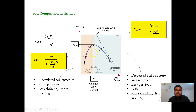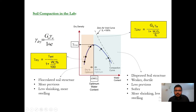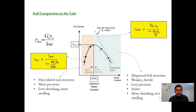The compaction curve can be divided into two regions: wet of optimum and dry of optimum. Depending on the project, we compact the soil in either region. For an embankment project, we want the material to be less permeable, so we compact in the wet region. For a pavement project, we want the material to be more pervious so rainwater can infiltrate, so we compact in the dry region.